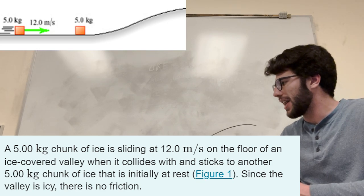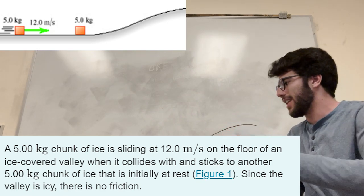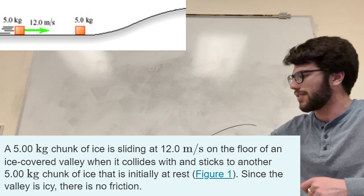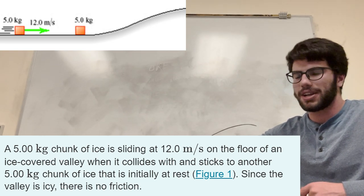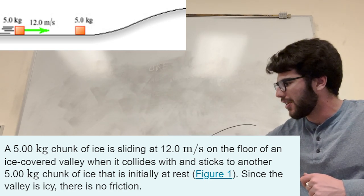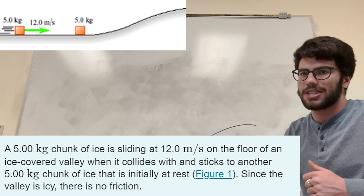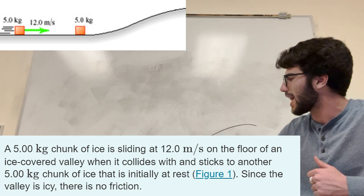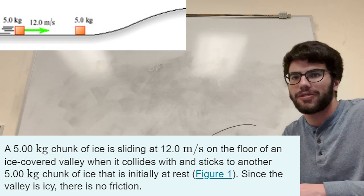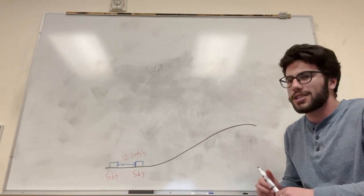All right, so we have a five kilogram chunk of ice sliding on ice and it runs into this other five kilogram chunk of ice and it hits it at 12 meters a second. It wants to know how far up will it be able to go, like what's its vertical distance up it'll be able to slide after this collision, assuming there's no friction.